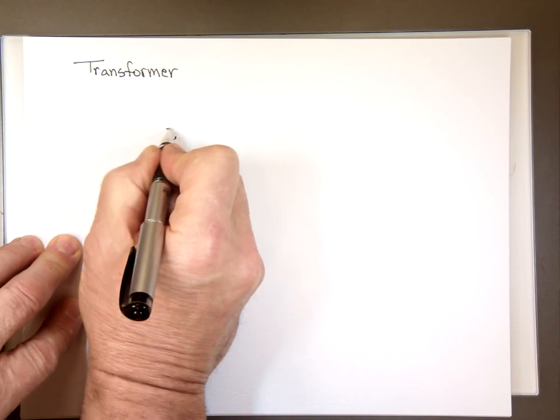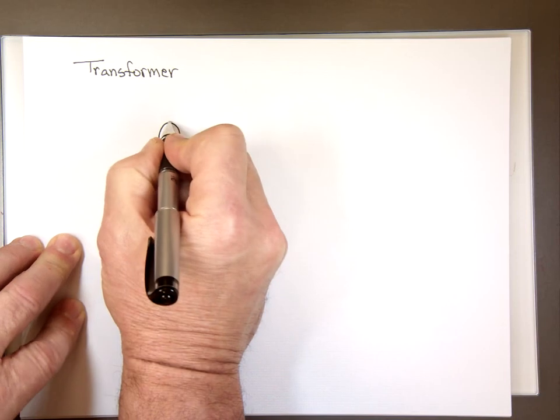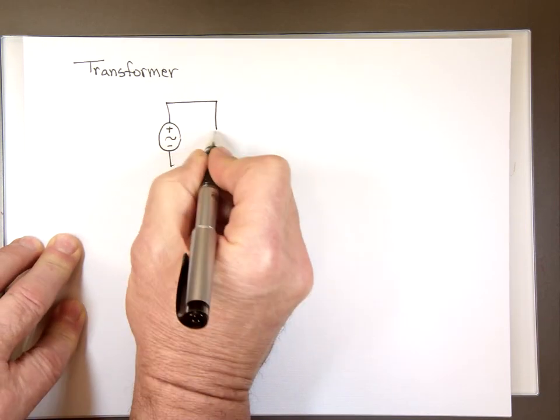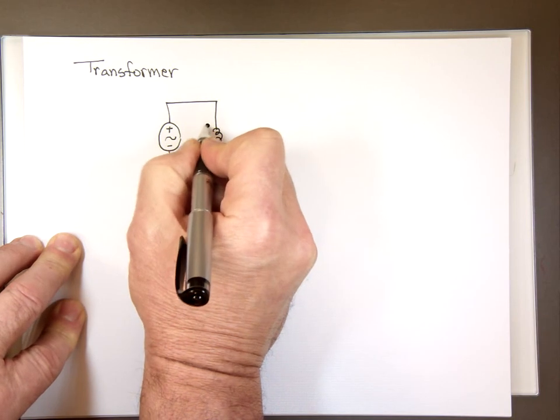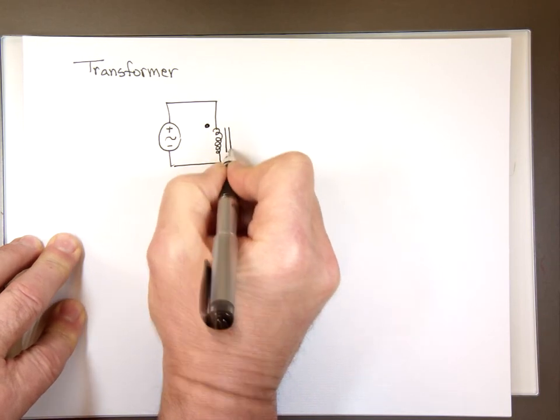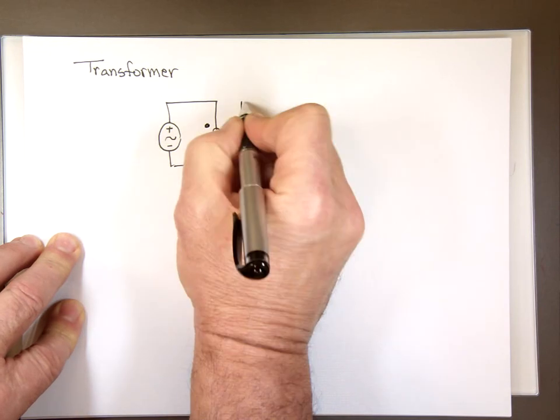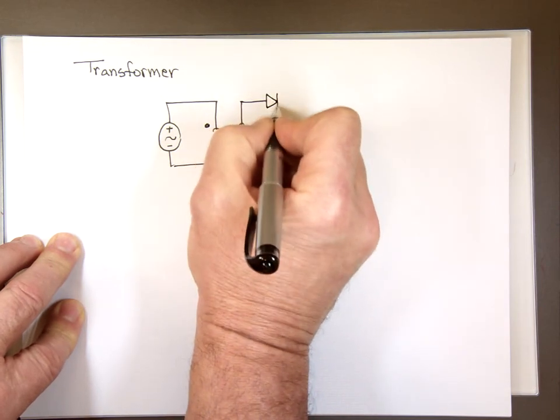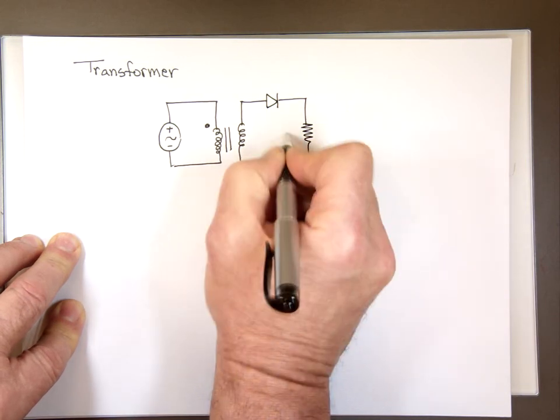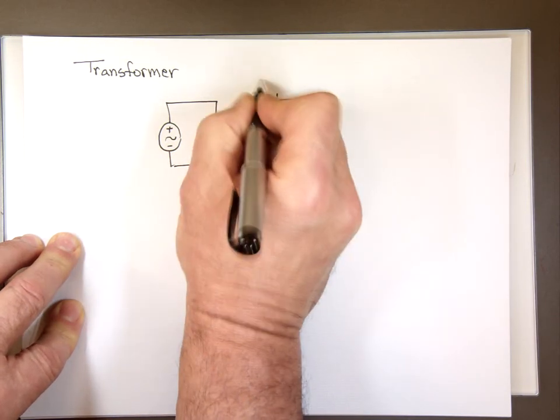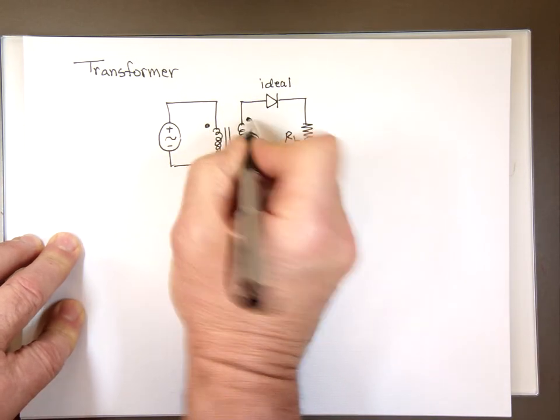So let's take a picture. Let's say we have a transformer. The way we draw a transformer, we put a dot on—that's the polarity—and a straight line to indicate that it's an ideal one. Here's my diode and this is my load resistor right there. Ideal diode. We'll use ideal for now.